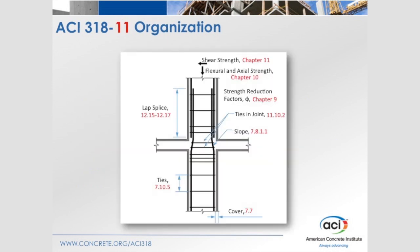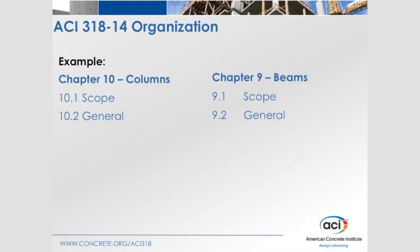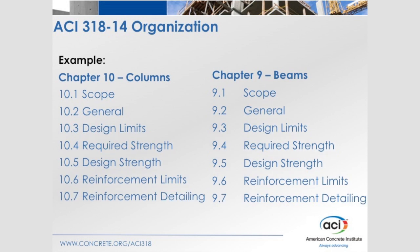For example, when designing and detailing a column using the existing 318 organization, provisions are located throughout several chapters. In 318-14, all of the relevant design and detailing requirements for a member are located in one chapter. Furthermore, all of the member chapters follow the same organization so that designers know where requirements are located throughout all of the eight member chapters.